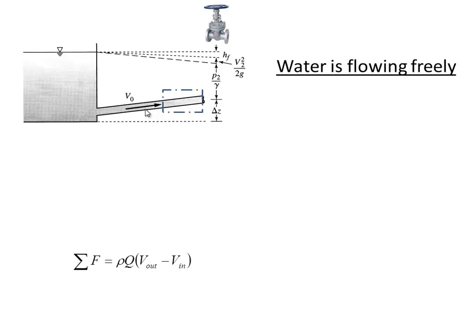We're talking about water hammer. You missed a really great YouTube video, but the link's on here so you can watch it tonight. Here's a picture of a reservoir with water flowing through a pipe. There's a valve at the end of the pipe, but right now the valve's open and water's moving freely. We're looking at what happens as water flows through this imaginary control volume — just an imaginary box surrounding a section of the pipe — keeping track of water going in and water coming out.